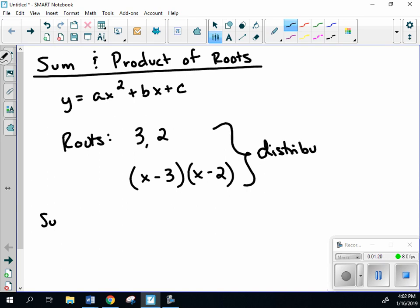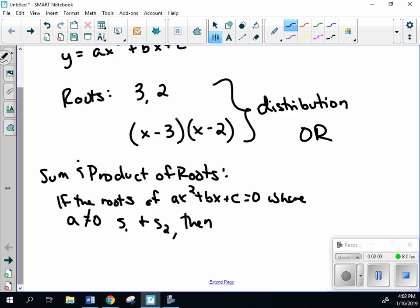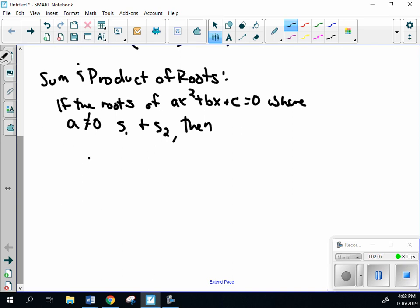Sum and product of roots states: if the roots of ax² + bx + c = 0, where a ≠ 0, and your roots are s₁ and s₂, then you can determine a, b, and c without doing distribution. s₁ + s₂ equals -b/a, and s₁ × s₂ equals c/a.